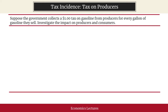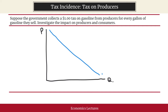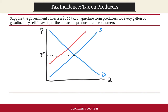Let's first draw the market for gasoline, with quantity of gasoline on the horizontal axis and price of gasoline on the vertical axis. I will draw a downward sloping demand curve and an upward sloping supply curve and I will label the equilibrium price for gasoline. To keep things clean I'll not label the equilibrium quantity. The government is going to take a dollar away for every gallon of gasoline sold by producers, so this is the supply curve with tax.